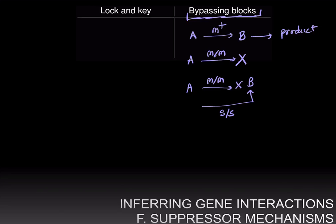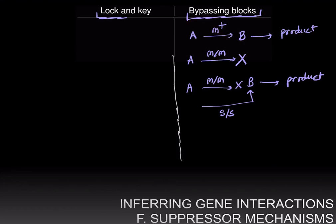However, if you have a suppressor that can bypass this pathway, and if you have the mutant allele of the suppressor, then it can bypass the pathway and create B independently, leading to creation of the final product. Then this su over su will suppress the mutant phenotype. Another mechanism for suppression is a lock and key mechanism.